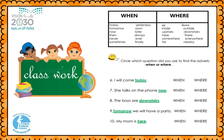Number seven: 'She talks on the phone now.' The adverb is 'now.' Which question did I use? When. When did she talk on the phone? Now — it shows the time, so circle when. Number eight: 'The boys are downstairs.' The adverb is 'downstairs.' Which question? Where. Where are the boys? Downstairs — it shows the place, so circle where.